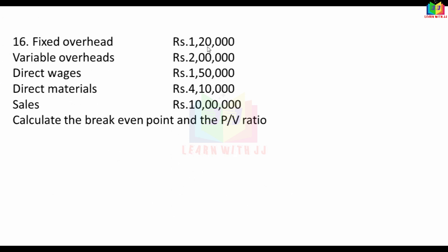Next problem: Fixed overhead is 1,20,000. Variable overhead is 2,000. Direct wages is 1,50,000. Direct material is 4,10,000. Sales is 10,00,000. Calculate the break-even point and the PV ratio.